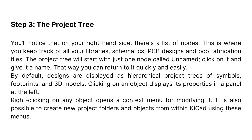Step 3: The Project Tree. On your right-hand side, you'll notice a list of nodes. This is where you keep track of all your libraries, schematics, PCB designs, and PCB fabrication files. The project tree will start with just one node called Unnamed — click on it and give it a name so you can return to it quickly and easily. By default, designs are displayed as hierarchical project trees of symbols, footprints, and 3D models. Clicking on an object displays its properties in a panel at the left, and right-clicking opens a context menu for modifying it.